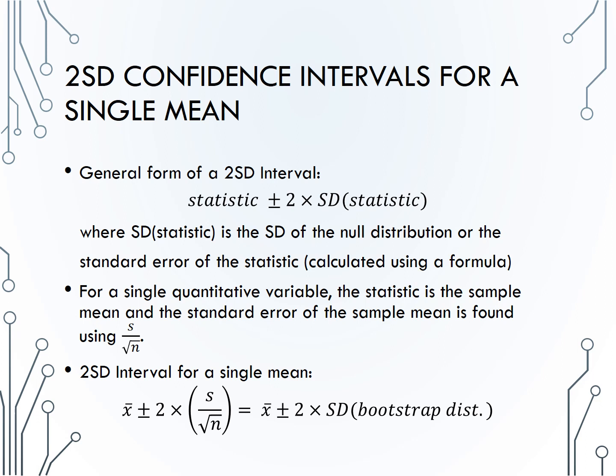For a single quantitative variable, the statistic is the sample mean x bar, and the standard error of the sample mean is found by using s, the sample standard deviation, divided by the square root of n, the sample size. Therefore, the 2SD formula for a single quantitative variable is to take x bar plus or minus 2 times s over root n, or x bar plus or minus 2 times the standard deviation of the bootstrap distribution.